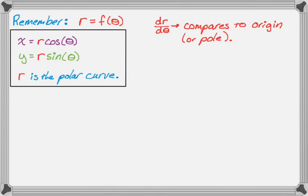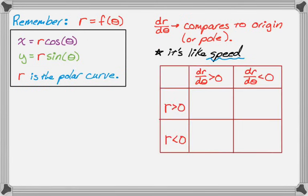And there's a couple of options. So this works a lot like speed, where you have to look at velocity and acceleration, see if they have the same sign or if they have opposite signs. And I made this little table. Hopefully you already have this kind of memorized. But there's four things that can happen. You could have r be positive or negative, and then dr/dθ can be positive or negative. So for example, if r is greater than 0 and dr/dθ is greater than 0, then you're going to be moving away from the origin for that value of theta.